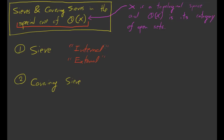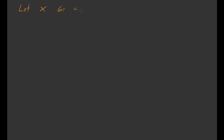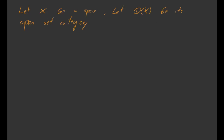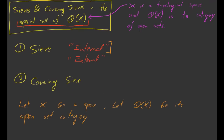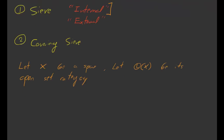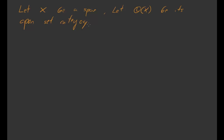Let's start with the internal definition of a sieve. Again, all of this is only over the open set category of a topological space. So we'll let X be a topological space, and we'll let O(X) be its open set category. Both the definition of a sieve and a covering sieve will be generalized later to Grothendieck topologies, but for now we're just talking about a classical topological space. We'll let U be an object of O(X), so U is just an open set of X.